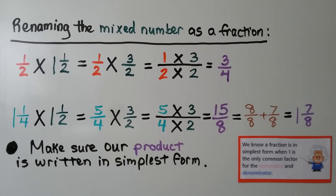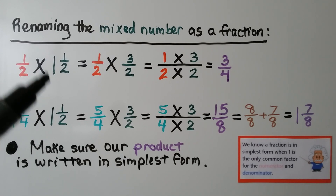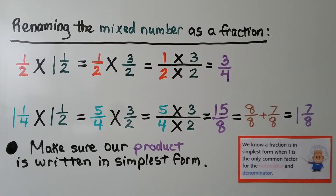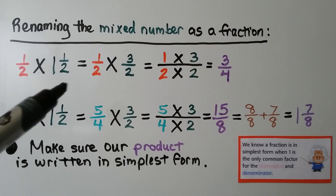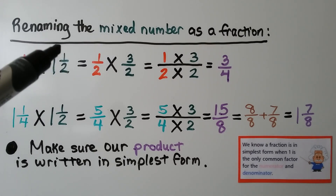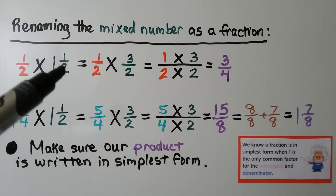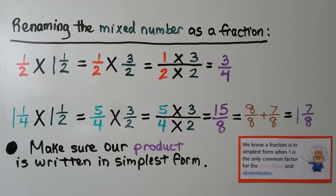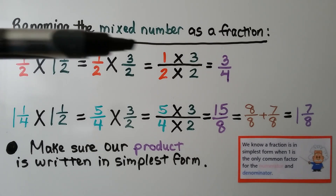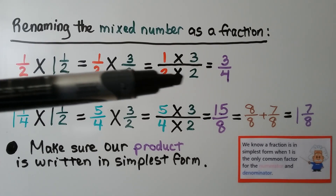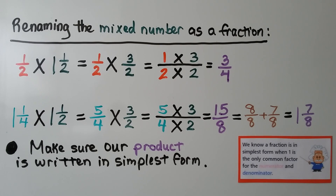For renaming the mixed number as a fraction, we have 1 half times 1 and a half. We change 1 and a half by renaming it as 3 halves: 1 times 2 is 2, add the numerator 1, giving 3, placed over the original denominator — 3 halves. Now we multiply the numerators straight across: 1 times 3 is 3, and the denominators straight across: 2 times 2 is 4. It's equal to 3 fourths.